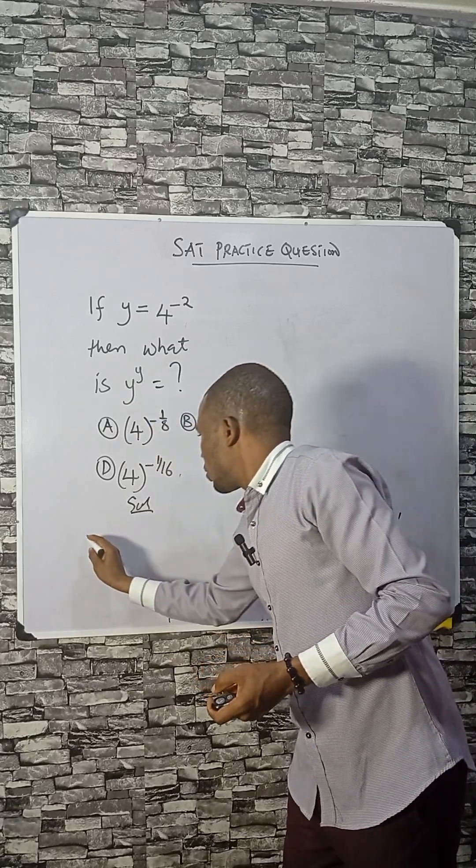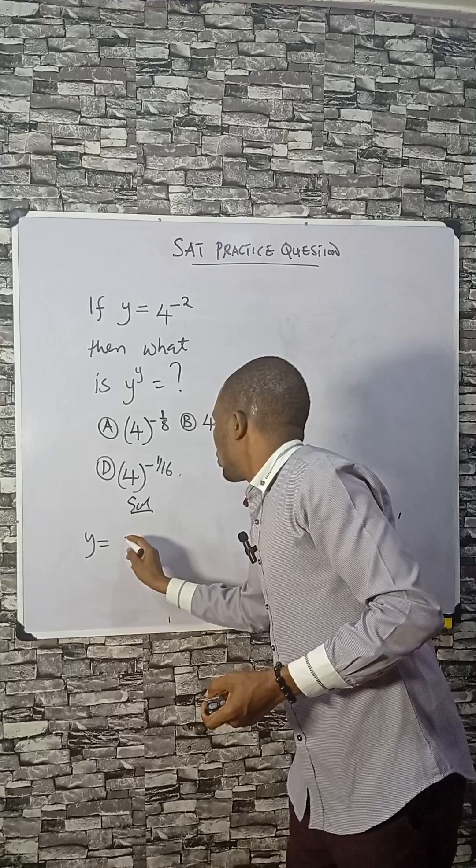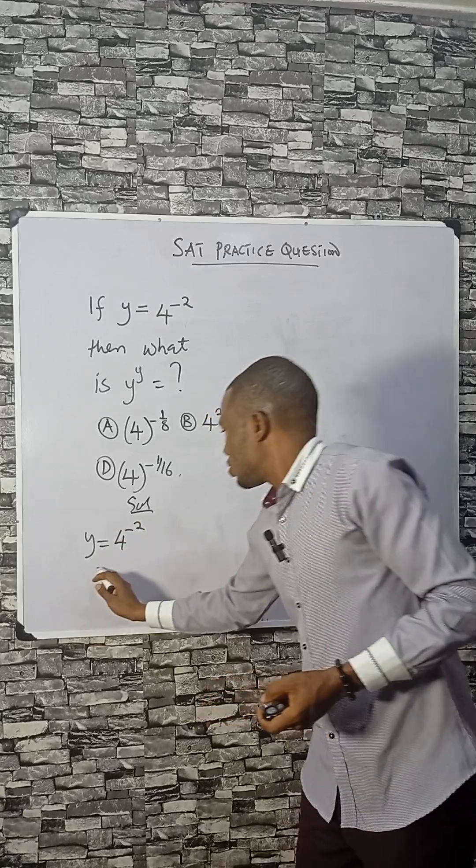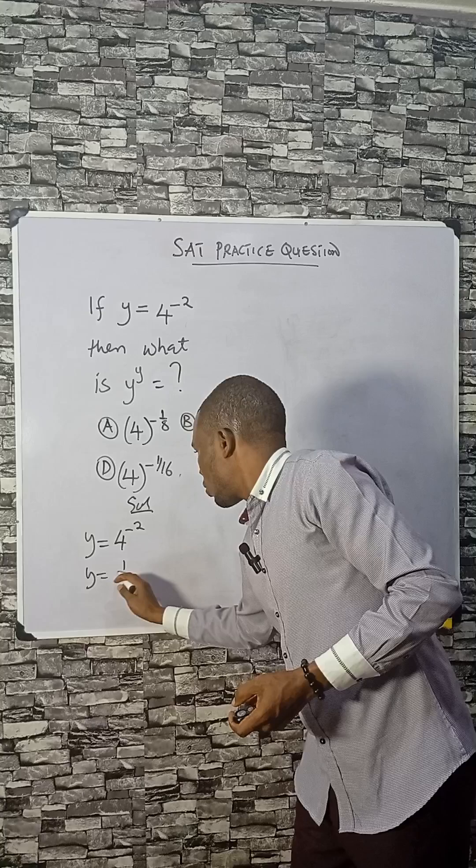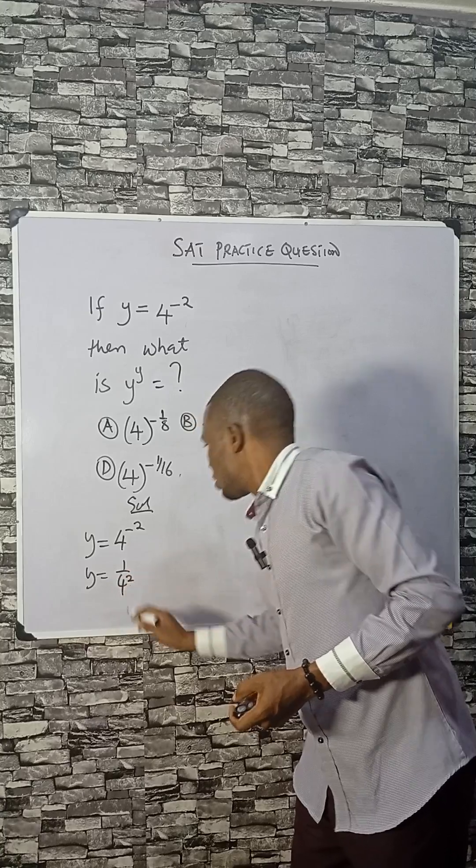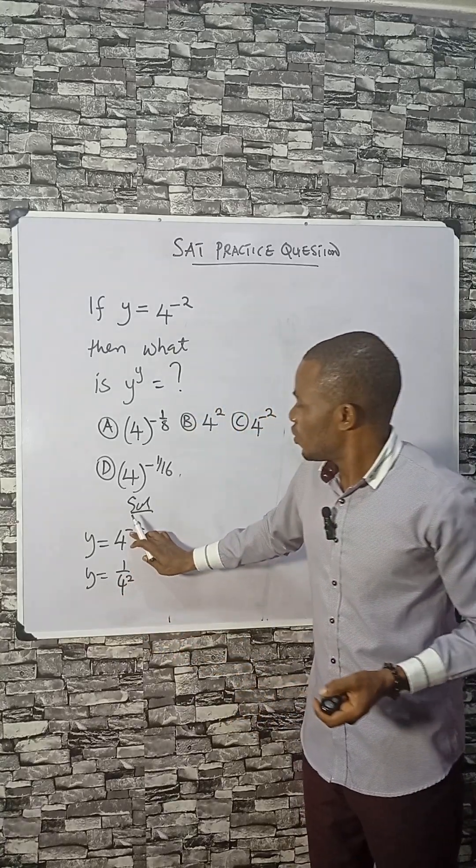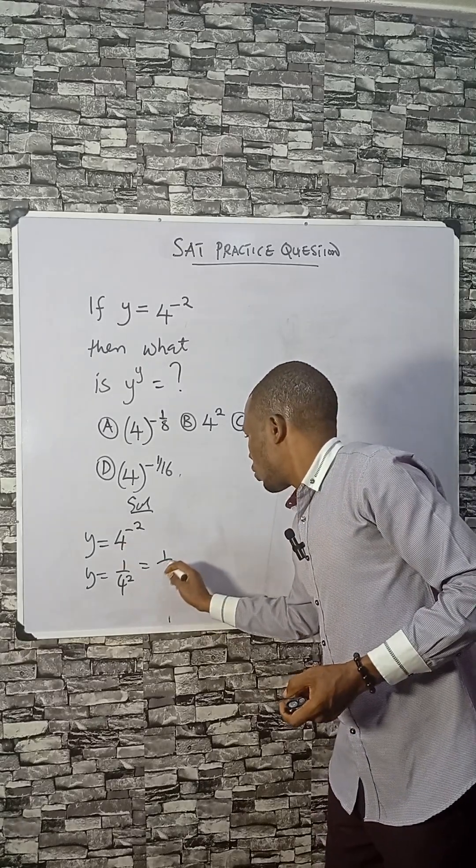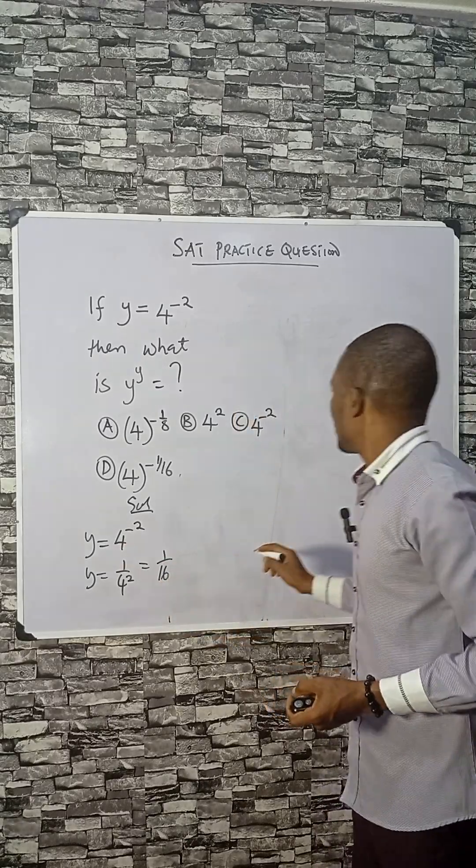Solution: y equals 4 raised to the power minus 2. We can simplify this to be 1 over 4 squared. If I take the inverse of this, the negative exponent will go, and that will be 1 over 16.